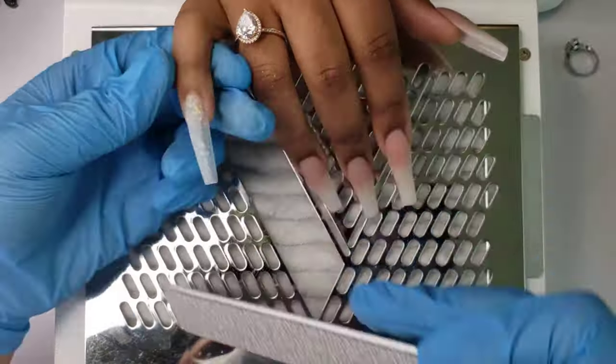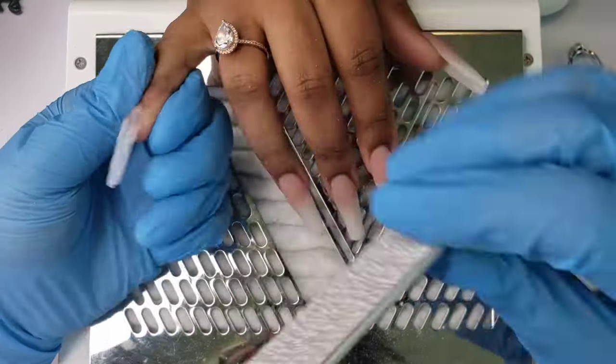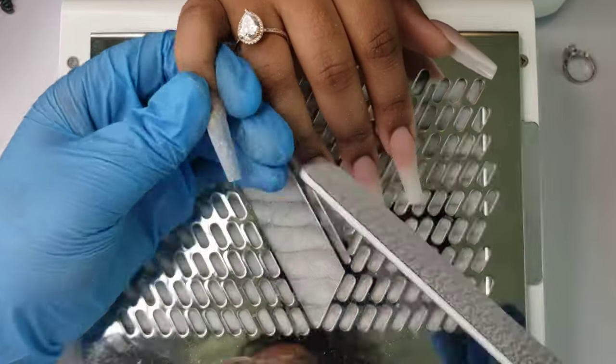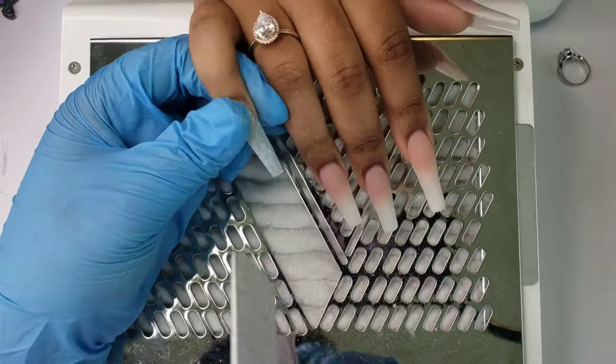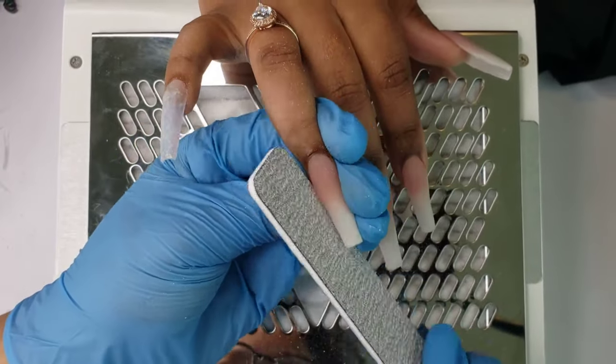I use the file to remove any bumps or lumps, as when a nail is longer it's a little bit harder to smooth out the nail with the electric file. That's why I recommend doing this step that you see here.